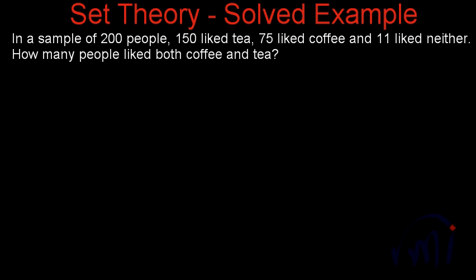In this video we are taking a solved example and trying to solve it. The problem statement says: in a sample of 200 people, 150 like tea, 75 like coffee and 11 like neither. How many people like both coffee and tea?